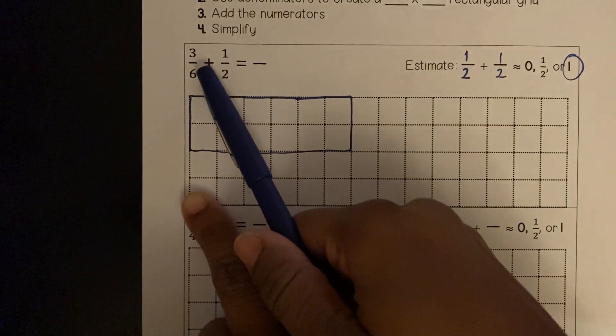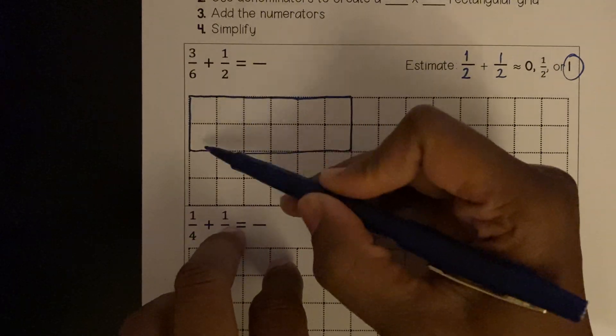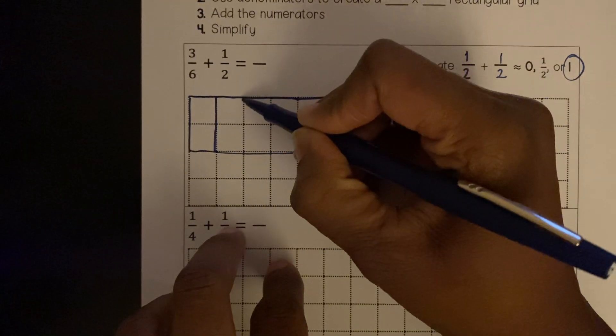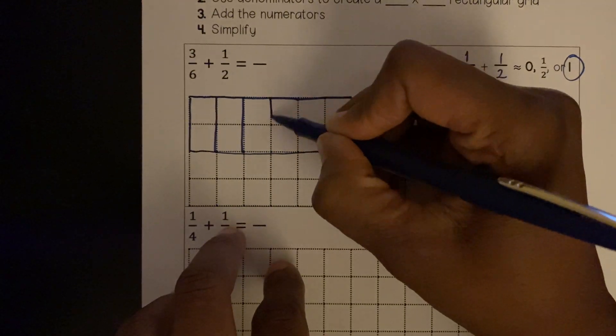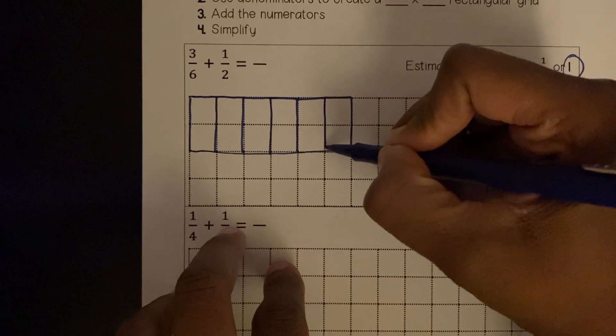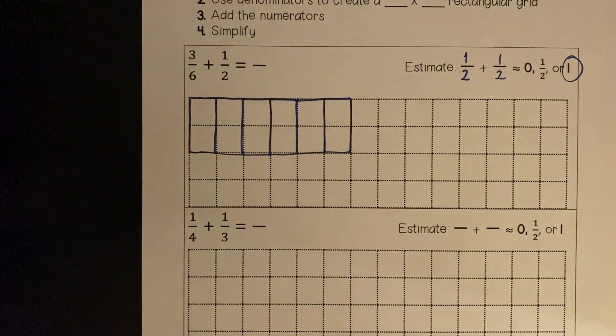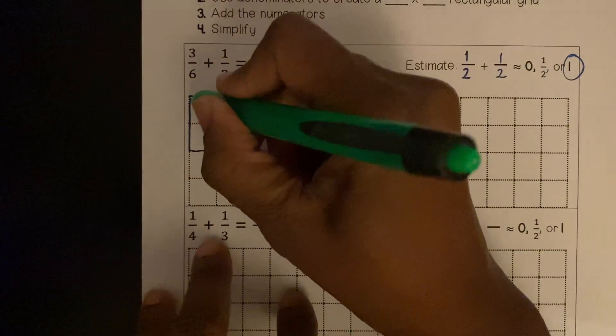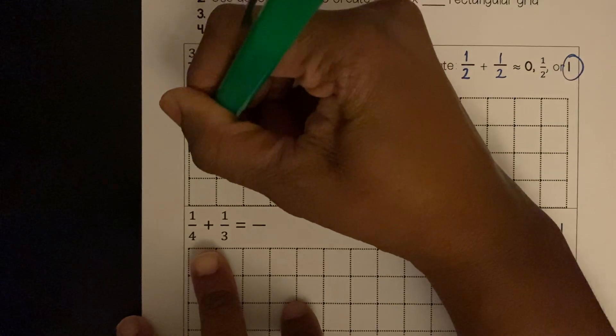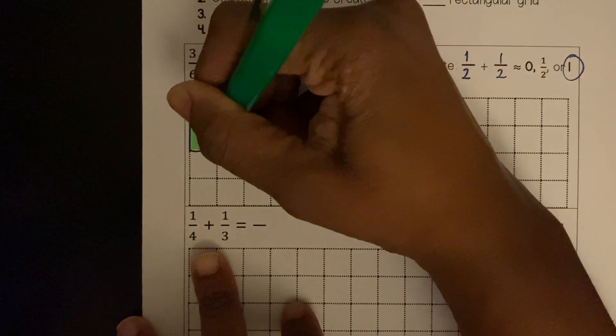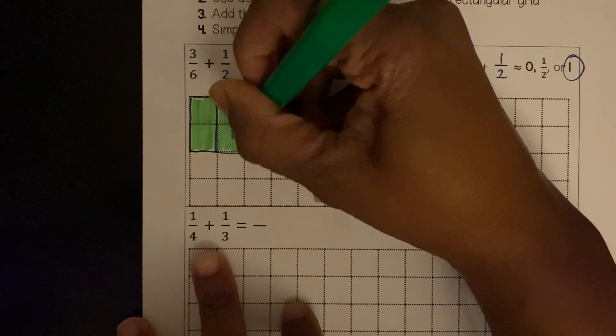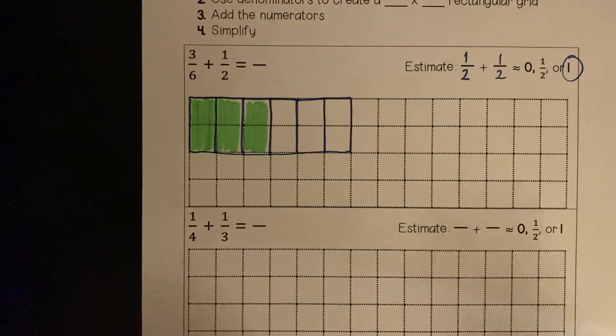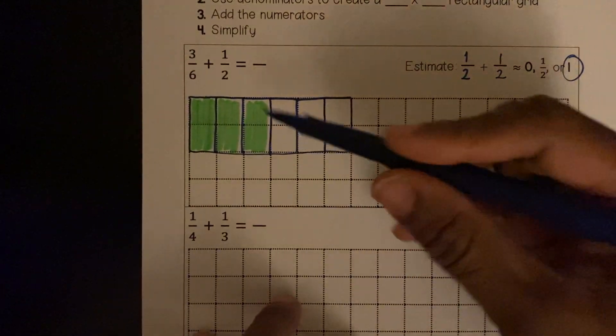Because I'm modeling the 3/6, I need 3/6 of something. One, two, three, four, five, six. 1/6, 2/6, 3/6, 4/6, 5/6, and 6/6. I need to shade in 3 of the sixths. 1/6, 2/6, 3/6. All right.